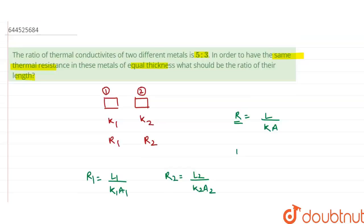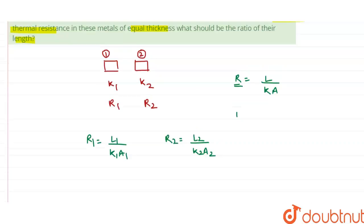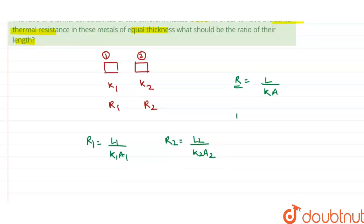Now, in the question they are saying that in order to have the same thermal resistance, that means R1 = R2. The second thing given in the question is that these metals have equal thickness.